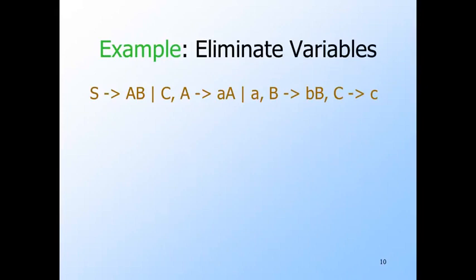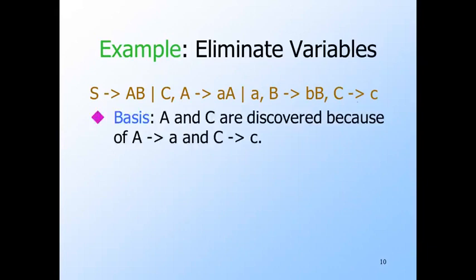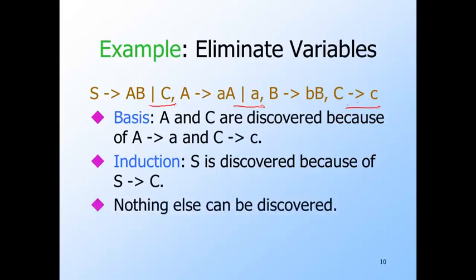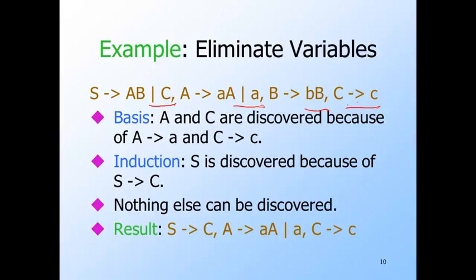Here's an example grammar to which we first apply the algorithm to discover variables that derive terminal strings. For the basis step, we immediately discover A and C because they have productions with bodies that are terminals only. For the first round of the induction, S is discovered because there is an S production with body C, and C was previously discovered. However, at the next round, we can discover no more variables. The only variable we have not yet found to derive a terminal string is B, and B has only one production body, which is little b followed by big B. This body does not consist only of terminals and discovered variables, so we can never add B to the set of discovered variables. Thus B is useless, and we eliminate all traces of it — including not only the production B goes to bB, but the production S goes to ABC, leaving us with the two A productions and the C production.